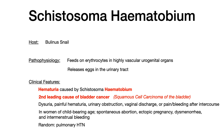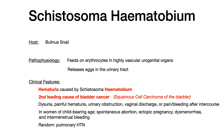The way to remember schistosoma hematobium is 'pistosoma hematobium' — 'piss' helps remember urogenital symptoms, and the 'hema' in hematobium helps remember hematuria and bladder cancer. And remember: tobium is terminal — schistosoma hematobium is the one with the terminal spine.